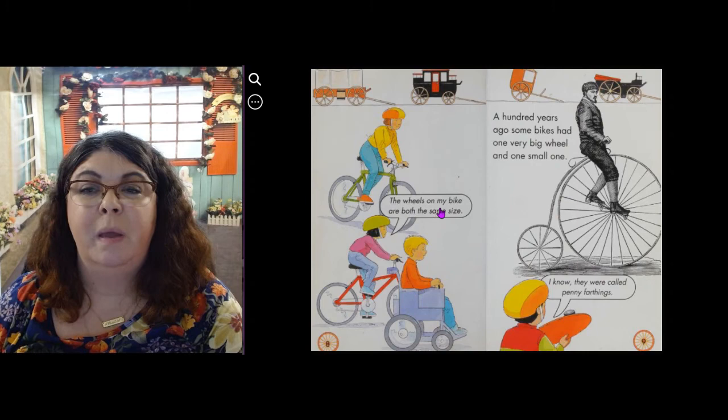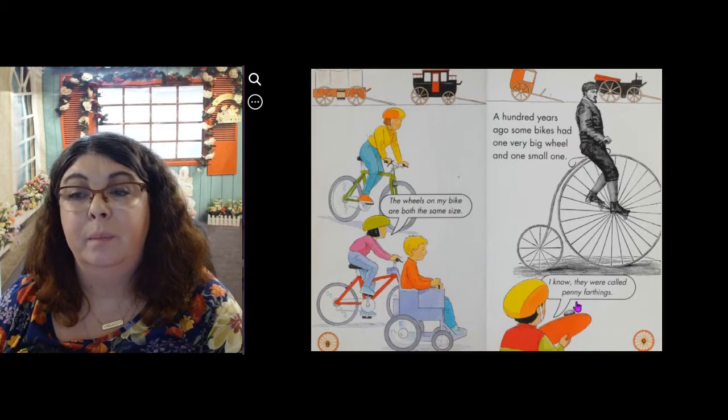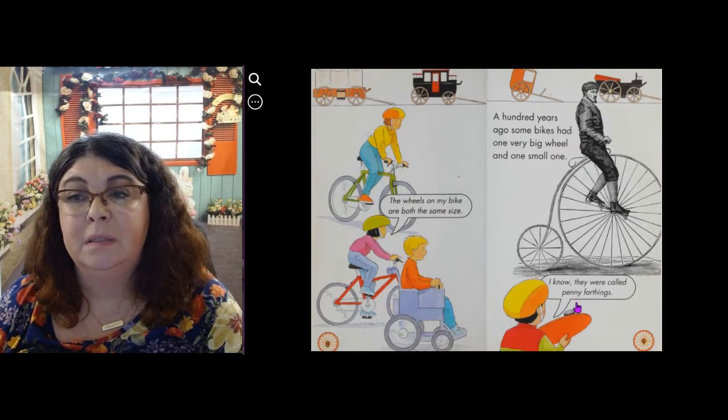The wheels on my bike are both the same size. A hundred years ago, some bikes had one very big wheel and one small one. I know they were called Penny Farthings.